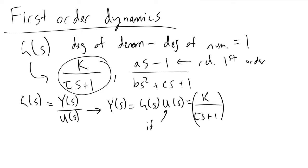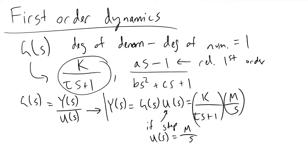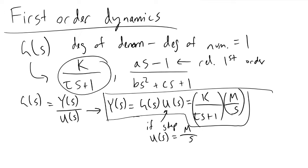If we're dealing with a step input, which is a very common input in process control, U(s) will be equivalent to the magnitude of the step input m divided by s — this is in the frequency domain. Plugging this in, we get Y(s) = k·m over [s·(τs + 1)]. Now that we have derived Y(s) in the frequency domain, we can figure out what it looks like in the time domain.